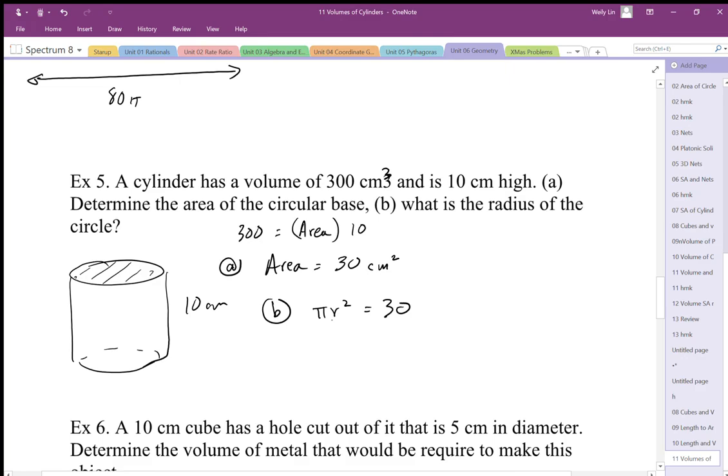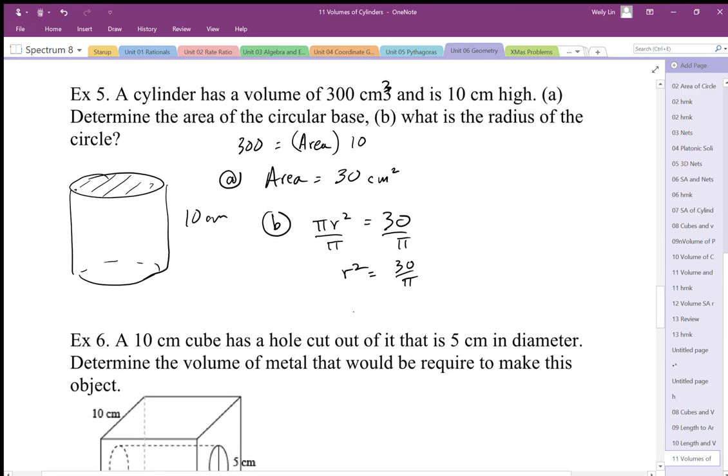I want to find out the radius, so I need to get rid of the times π, so I'm going to divide by π on both sides. And I'm going to get rid of that squared with the square root. So you end up with r equals the square root of 30 over π.